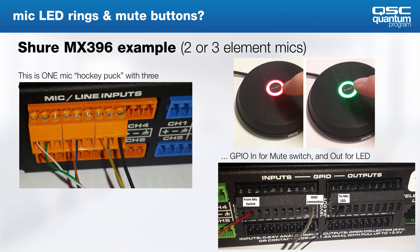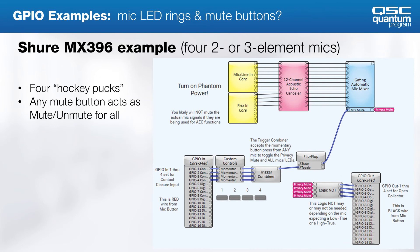The Shure MX396 has two or three microphone elements and provides multiple audio signals that will need to connect to the core. There is also a single switch connection, a single output to the LED, and a ground connection. If you output a digital high to this microphone the LED will show red, and if you output a digital low the microphone will turn green. Here's an example design of the MX396 with some custom controls to test the logic circuit downstream. This trigger combiner allows you to press any of the microphone buttons to act as one overall privacy or mute control, turning all LEDs to red so that everybody knows their mics are muted.